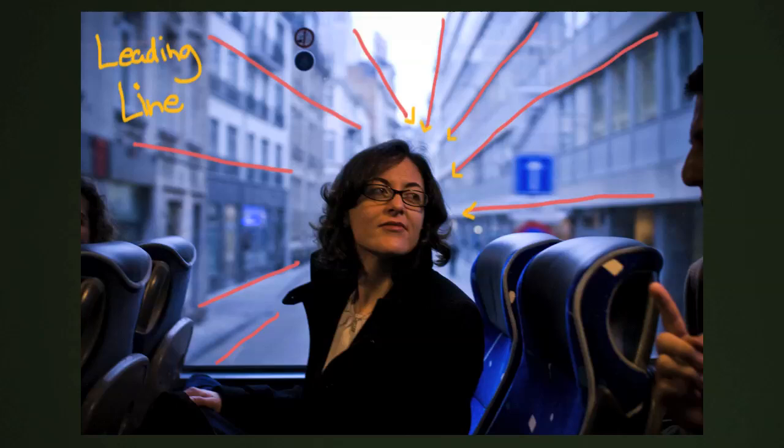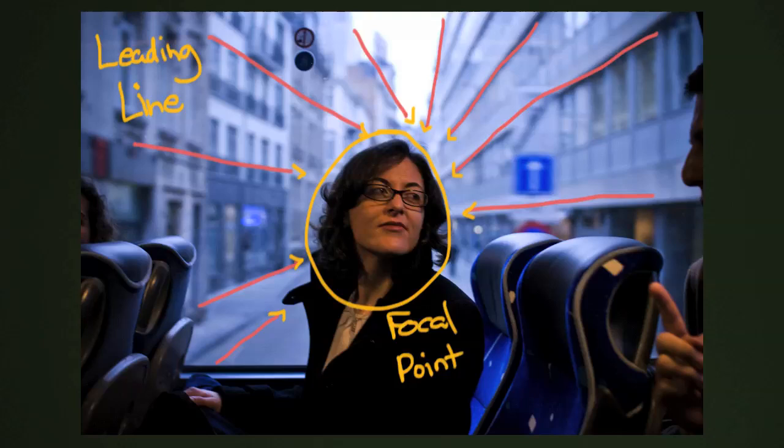Leading lines just means that there are lines leading from one point of your composition to another. And in this case, all the lines are leading straight to Caitlin's shining, beautiful face. This is called a focal point when everything is leading into one direction.